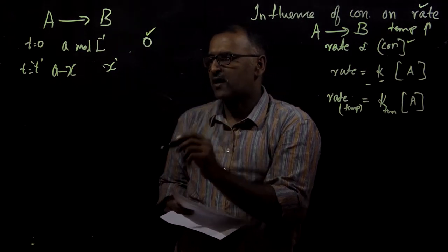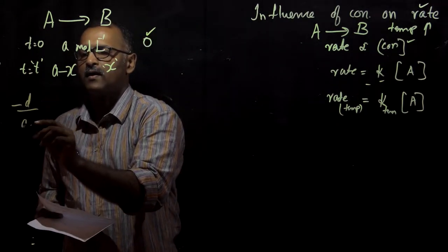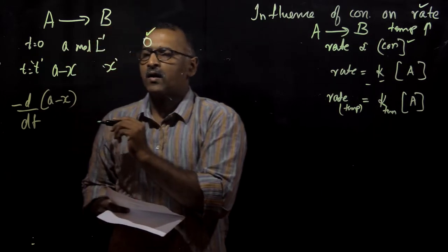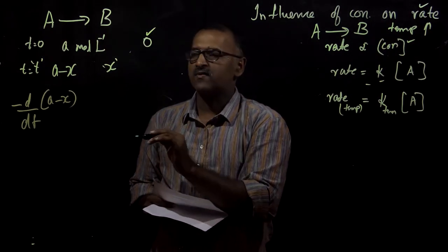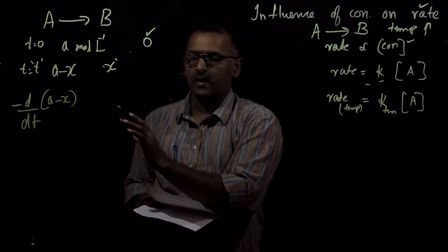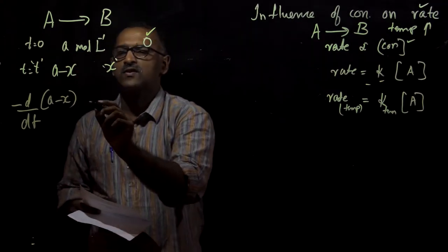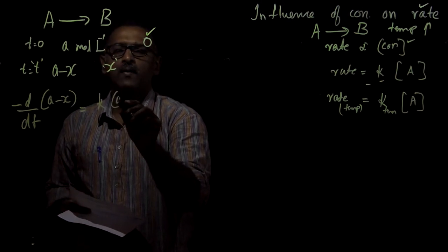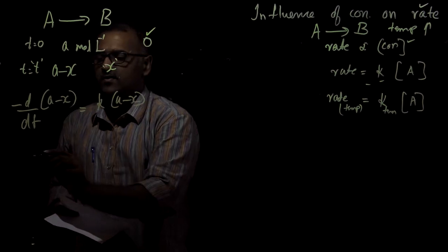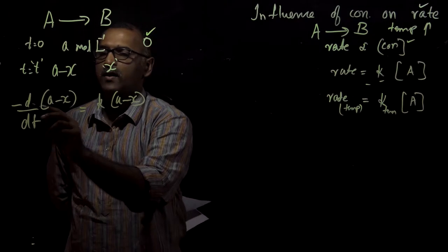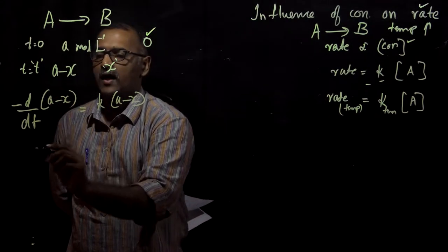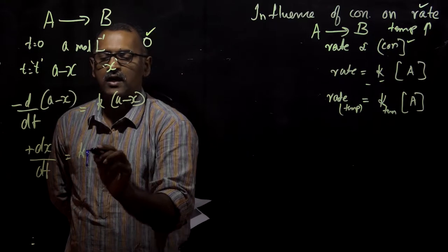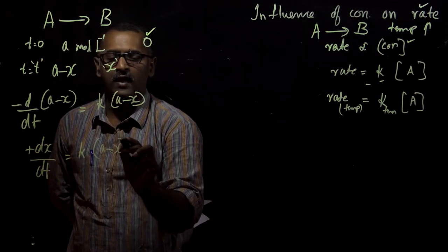The differential rate of reaction is written as minus d/dt of (A minus X). In all kinetic equations, we specify the rate at that particular time when the concentration of A is A minus X. This equals rate constant K multiplied by (A minus X). Upon simplification, since A is a constant, this becomes dx/dt equals K into (A minus X).